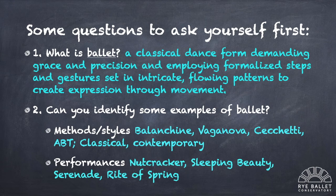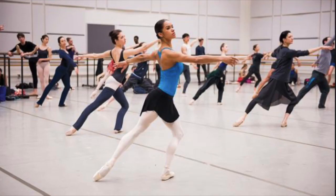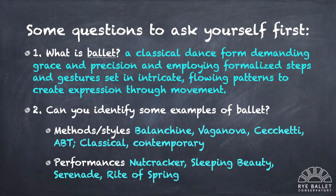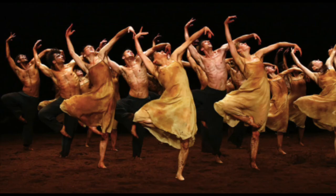It's important to identify that there are many methods of ballet, including Balanchine, Vaganova, Cecchetti, or ABT. Ballet can also take a classical or contemporary form. Let's also identify some visual examples of ballet, which largely take the form of performances — anything from Nutcracker to Sleeping Beauty to Serenade to the Rite of Spring.